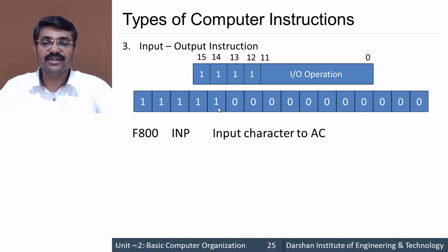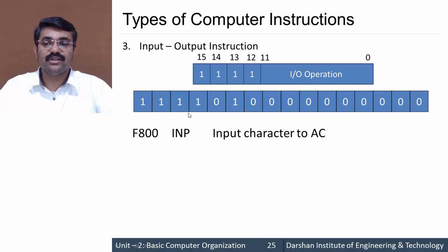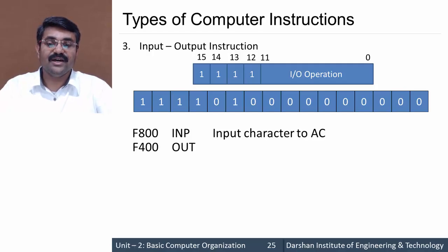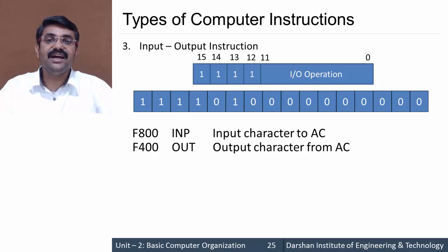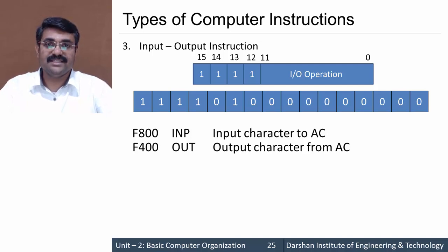Changing the bit for the second instruction, the hex code becomes F400, designated as OUT — output character from AC. This transfers the accumulator's data to the output device.